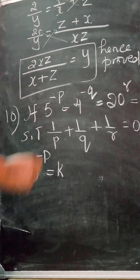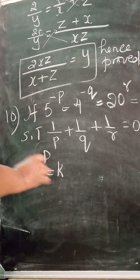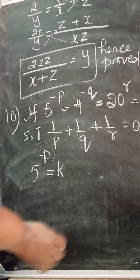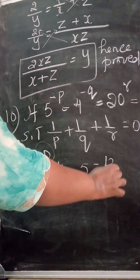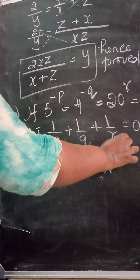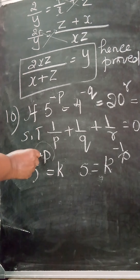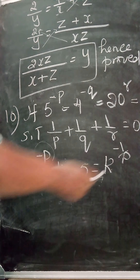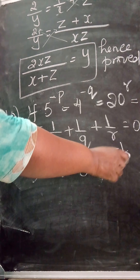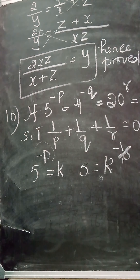So 5^(-p) = k, 4^(-q) = k, and 20^r = k. From the first: 5 = k^(-1/p) — the minus will remain, so it becomes minus 1/p. From the second: 4 = k^(-1/q). From the third: 20 = k^(1/r) — here there is no negative sign, so it becomes 1/r.